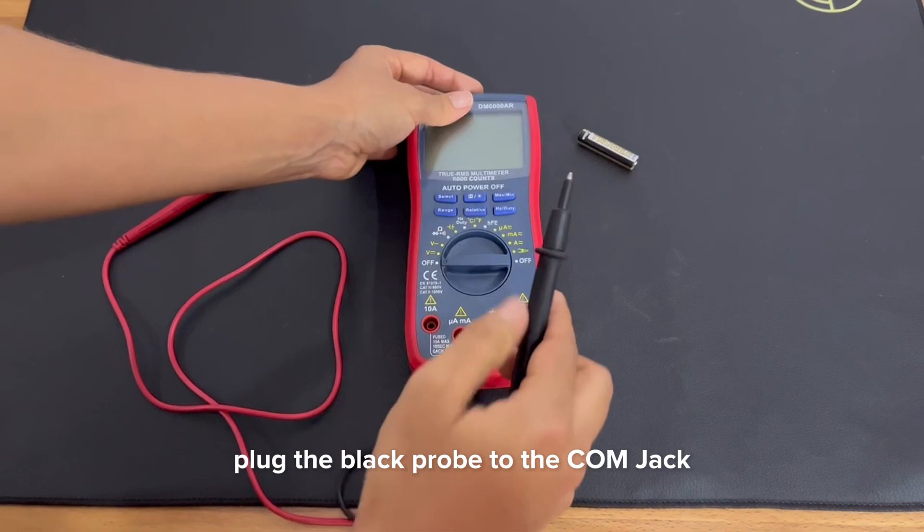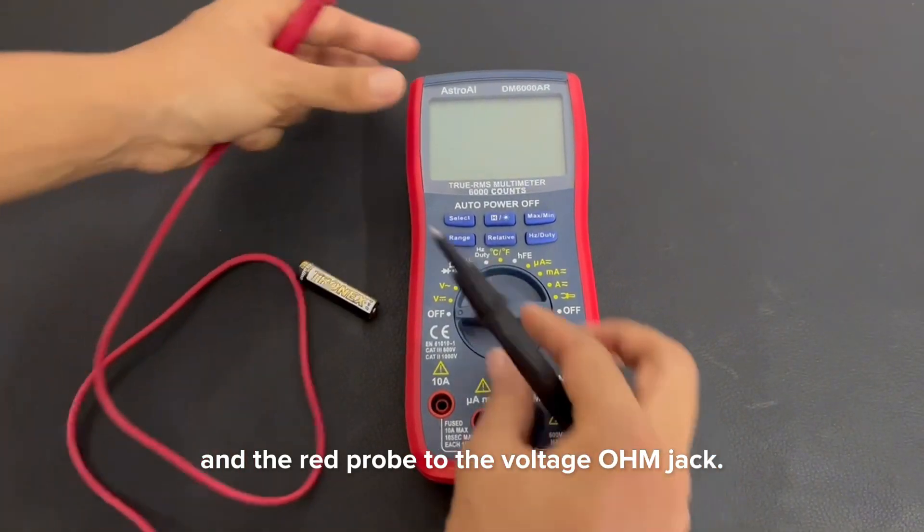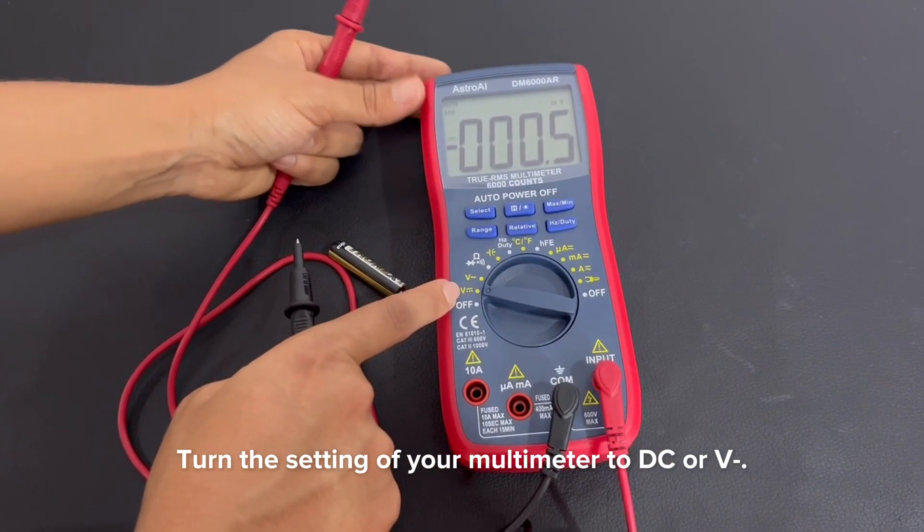Set up your multimeter. Plug the black probe to the com jack and the red probe to the voltage ohm jack. Turn the setting of your multimeter to DC or V.